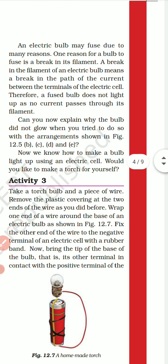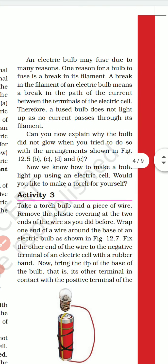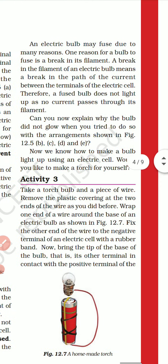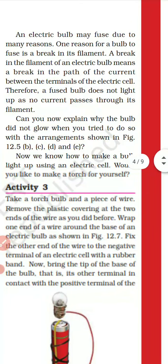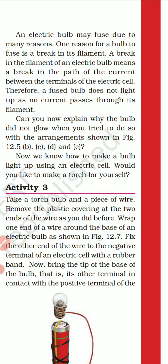An electric bulb may fuse due to many reasons. One reason for the bulb to fuse is a break in its filament. A break in the filament of an electric bulb means a break in the path of the current between the terminals of the electric cell. When the filament is broken, it means the electric path is not complete — the current path is breaking between the two terminals. Therefore, a fused bulb does not light up as no current passes through its filament.